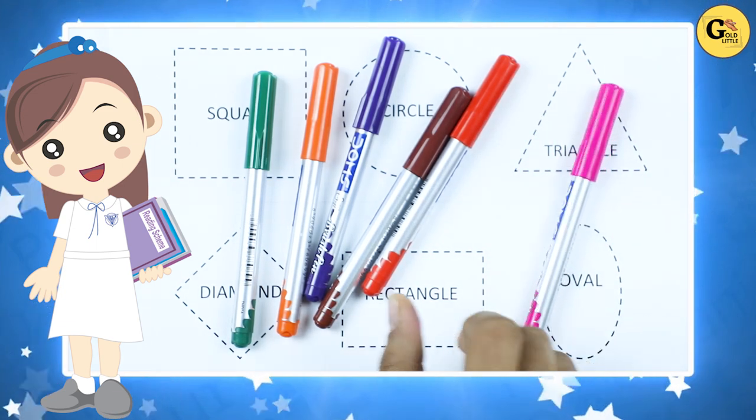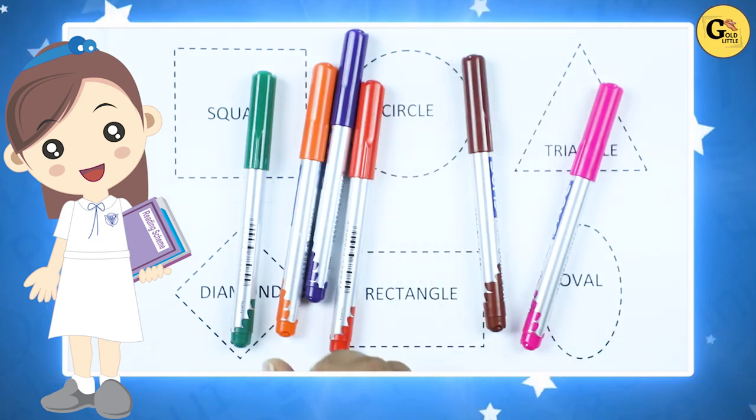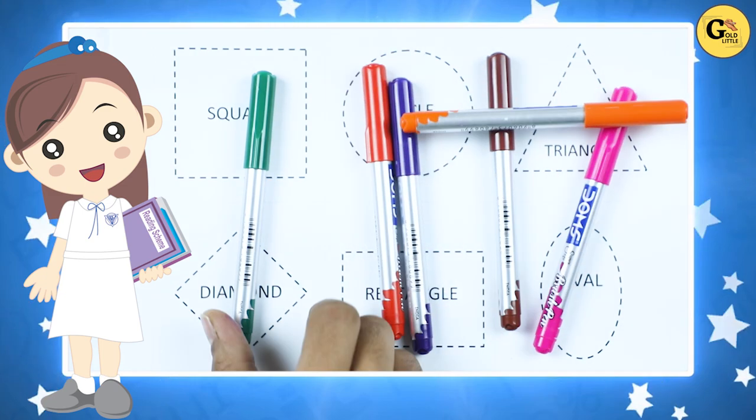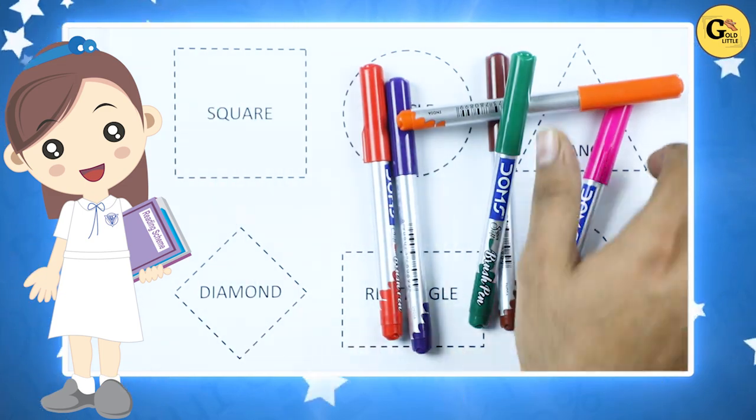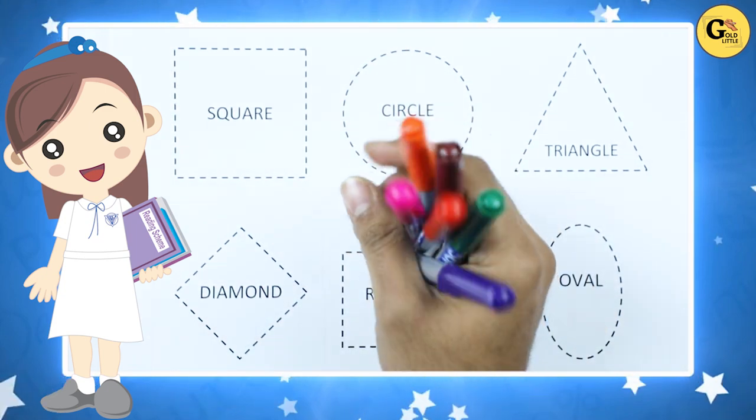It's pink color, red color, brown color, purple color, orange color, green color. So, let's start. Learn shapes.